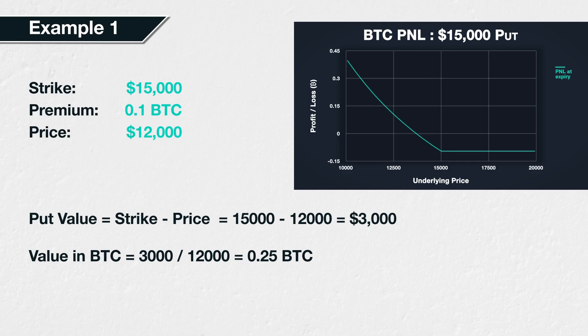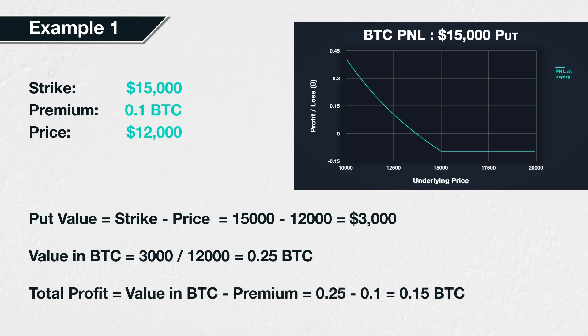There is one more step before we know our total profit or loss for the trade. We need to subtract the premium we paid. We initially paid a premium of 0.1 BTC for this option. So our profit or loss can be calculated as 0.25 minus 0.1, which equals 0.15 BTC. Our profit on this put option is 0.15 BTC.